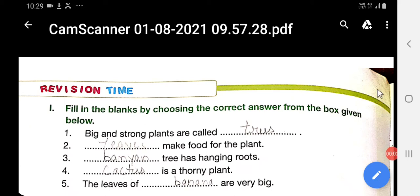Now we can do the exercise of chapter one, the plants around us, of class second. So first is fill in the blanks. Big and strong plants are called trees. Bade aur mazboot plants hum kya kehte hai? Trees kehte hai.